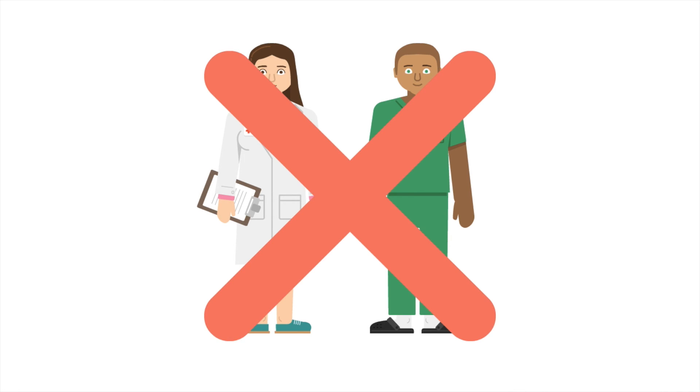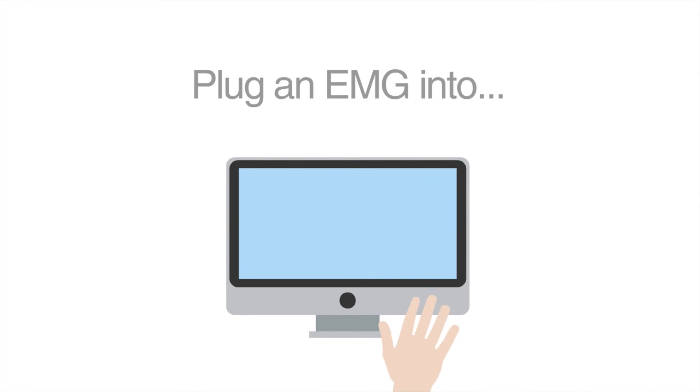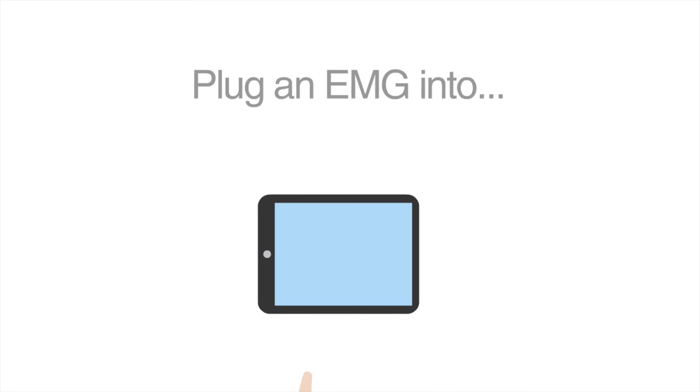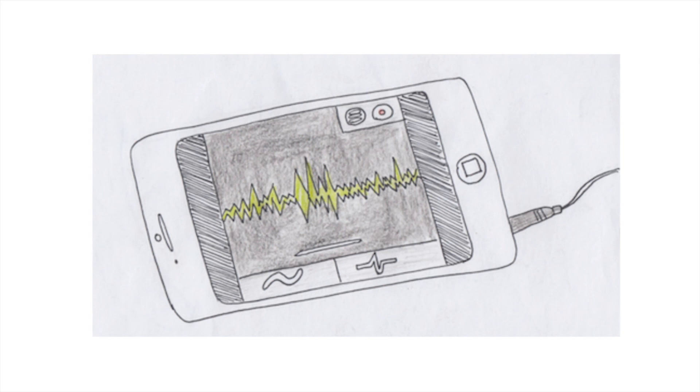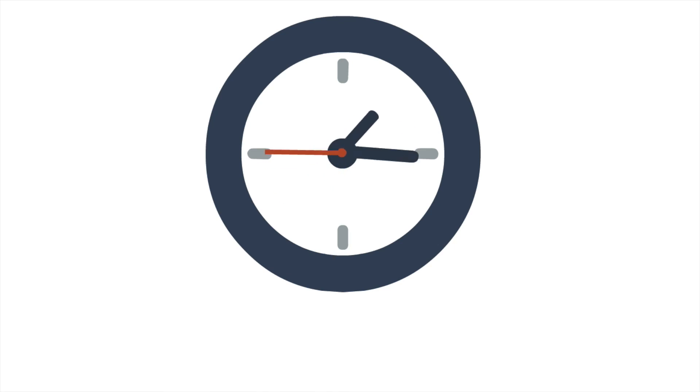However, you don't need to be a doctor to use EMG. Just hook up an EMG device into a computer or iPad or even your phone. Then attach the electrode patches to a muscle, let's say your bicep. Now, when you flex like this, your muscle activity may look something like this. So let's stop wasting time and get to recording our muscle activity.